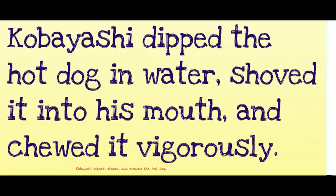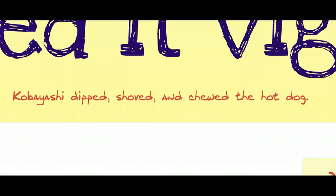Kobayashi dipped the hot dog in water, shoved it into his mouth, and chewed it vigorously. This is a wordy sentence, but let's break it down and look just at the verbs. What are the actions that Kobayashi is doing? Kobayashi dipped, shoved, and chewed the hot dog. If we take out all the extra language, these are the three actions that Kobayashi is performing.